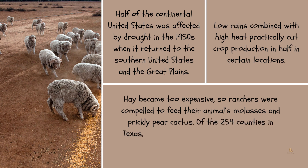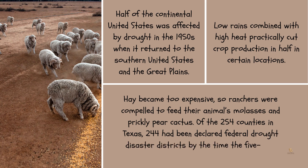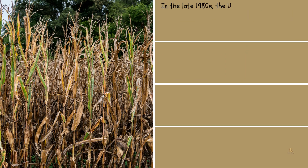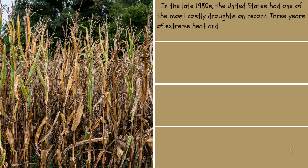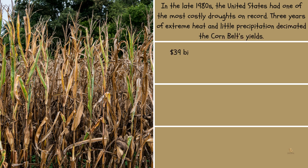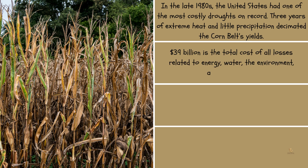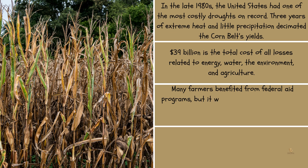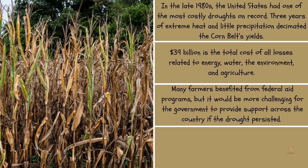Of the 254 counties in Texas, 244 had been declared federal drought disaster districts by the time the five-year drought ended in 1957. In the late 1980s, the United States had one of the costliest droughts on record. Three years of extreme heat and little precipitation decimated the Corn Belt's yields. Total losses related to energy, water, the environment, and agriculture amounted to $39 billion. Many farmers benefited from federal aid programs, but it would be more challenging for the government to provide support if the drought persisted.